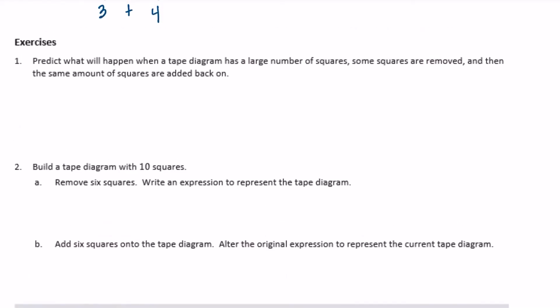So for example, maybe they had like 15 squares, a large number of squares. Some are removed, so maybe we subtracted 2, and then the same amount are added back on. So then they added the same amount back on. What's going to happen? So if I do 15 minus 2, I get 13, but then if I add 2, I end back up with 15. So it looks like when you remove some and add the same back on, you end up with the same amount of squares that we started with.